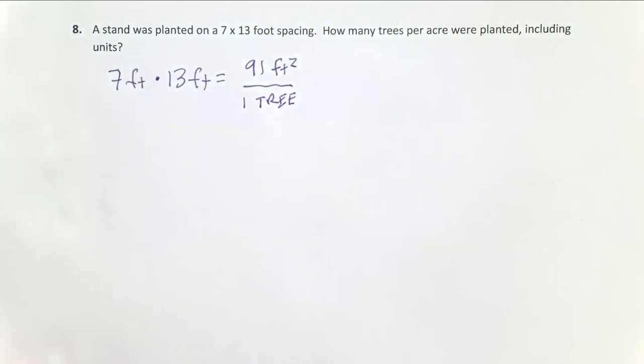Once we know the growing space one tree gets, we have to figure out how many trees fit per acre. So we're really just trying to figure out how many times 91 square feet will fit on an acre of land. Here's how we do that.